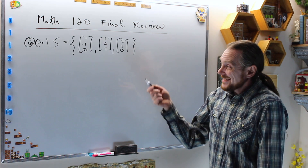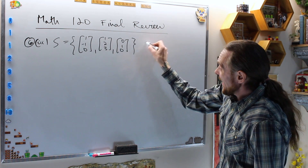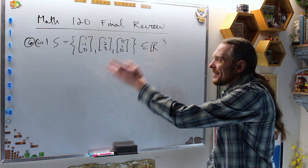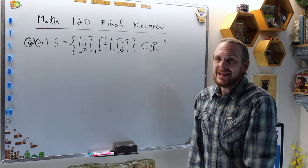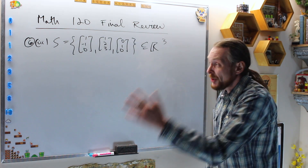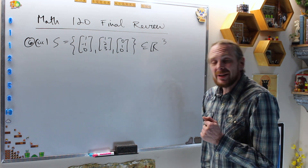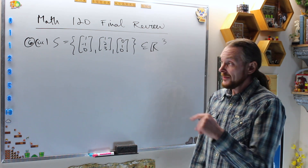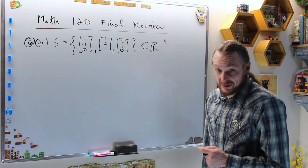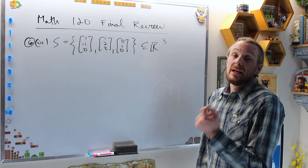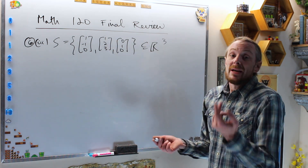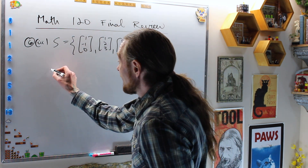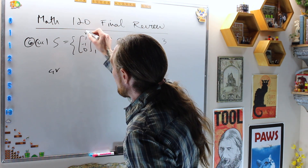For case three, S is a set of three vectors in three-space, so we have to check. It's either yes-yes-yes or no-no-no. Checking linear independence is much easier than checking span — you can see why in the other lecture videos — so that's what we'll do.